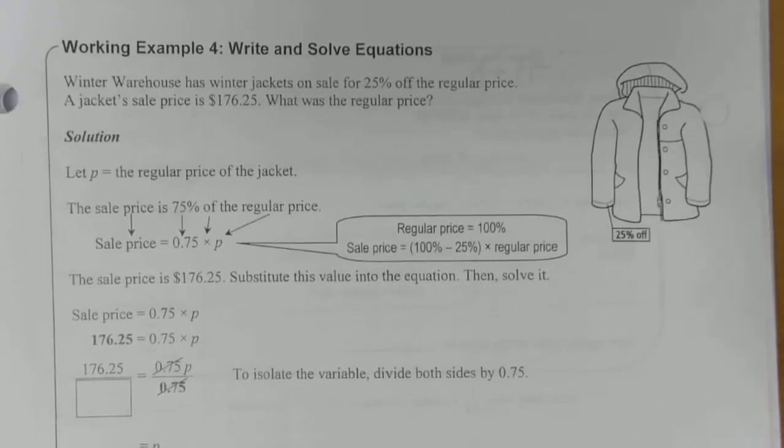Therefore, write and solve equations. A winter warehouse has winter jackets on sale for 25% off the regular price. The jacket's sale price is $176.25. What was the regular price?